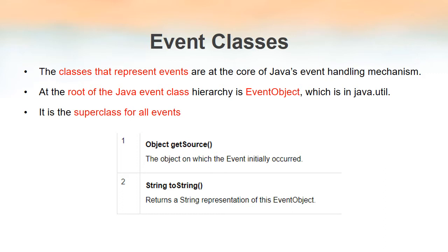The main class, or we can say the root of all event classes in Java, is the EventObject class. It is the parent class of all events in Java. Whether the event is created by the programmer or it is a built-in event, all the events are children of this EventObject. So EventObject is a superclass of all events.